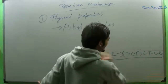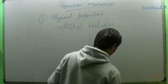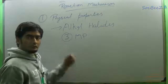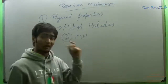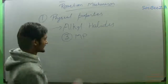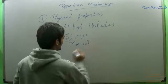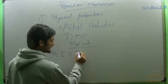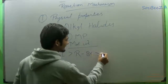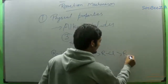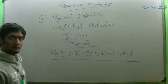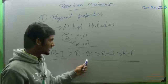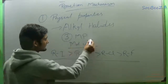The third property which we are going to discuss is melting point. We know that for melting point, the only factor which we have to consider is the molecular weight. And for the same alkyl group, the molecular weight of R-I will be much more than R-Br, then R-Cl, then R-F. So this melting point is straightforward — the simple order is R-I, then R-Br, then R-Cl, then R-F, because the deciding factor is molecular weight.